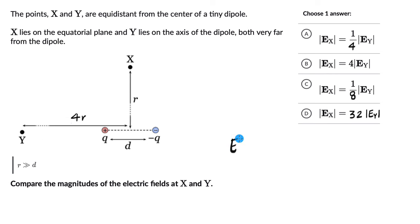The electric field on the equatorial plane, EX, equals P divided by 4πε₀r³, where r is the distance from the point to the center of the dipole.